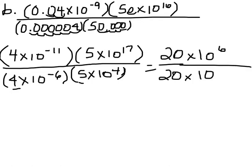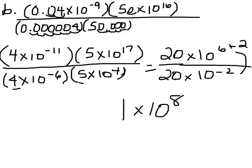Negative 6 and positive 4 is negative 2. Now I'm going to do my division. 20 divided by 20 is 1, which is already in scientific notation. And then this negative 2 is going to come up when I divide and it's going to be plus 2. So 1 times 10 to the 8th is my final answer.